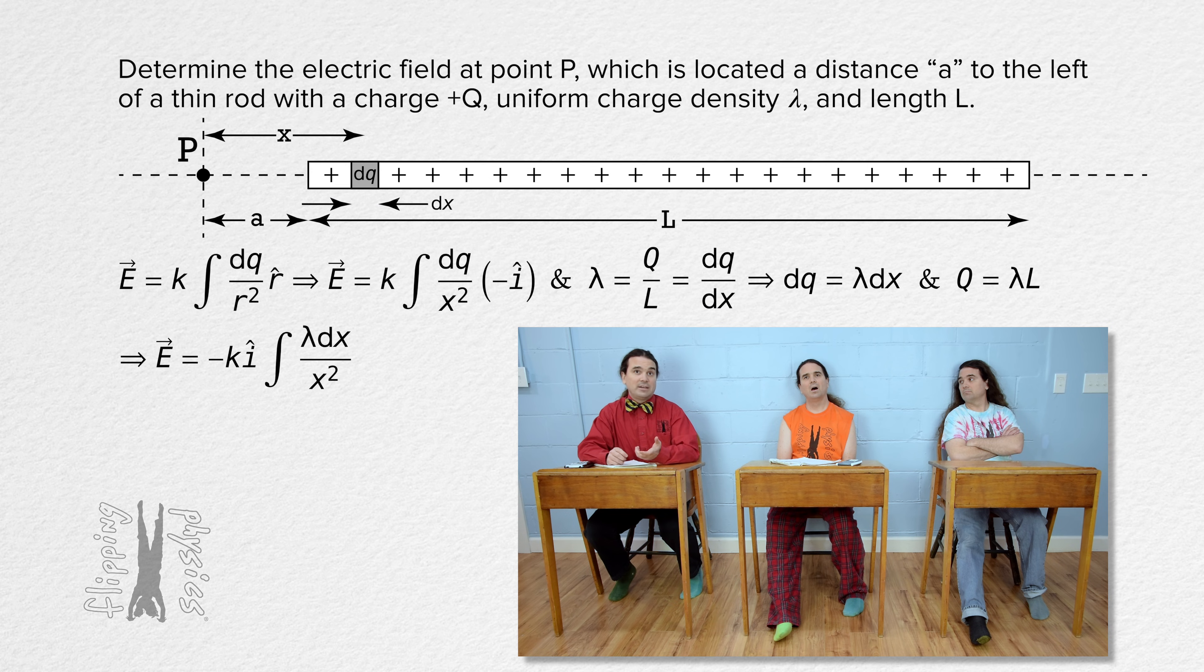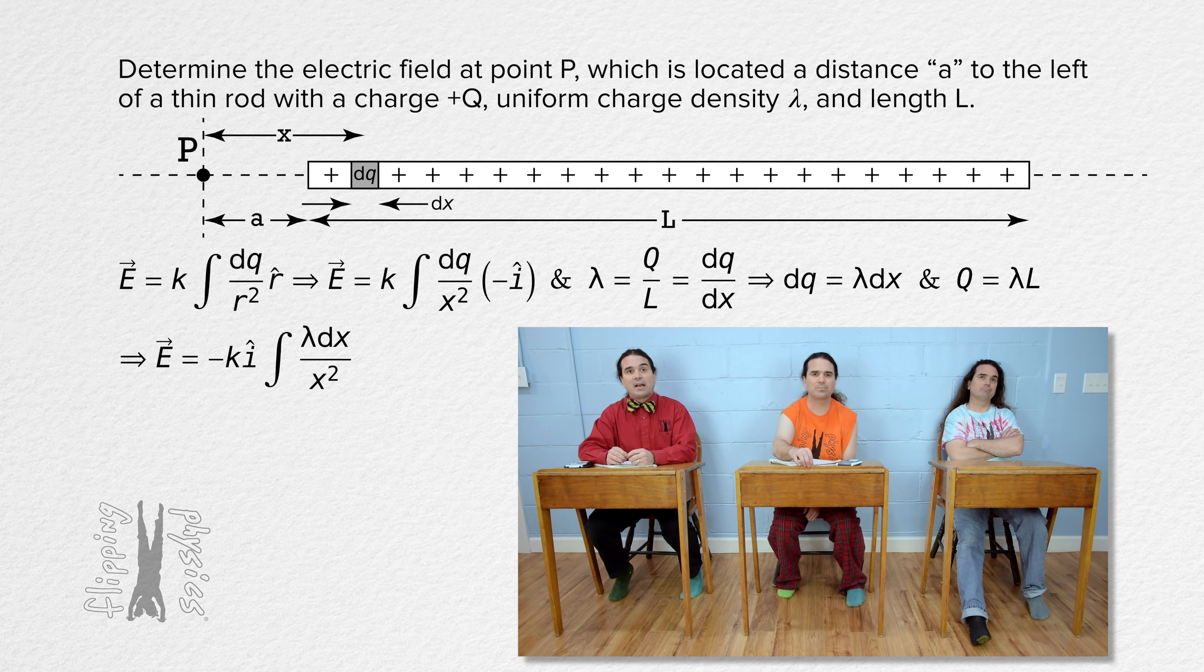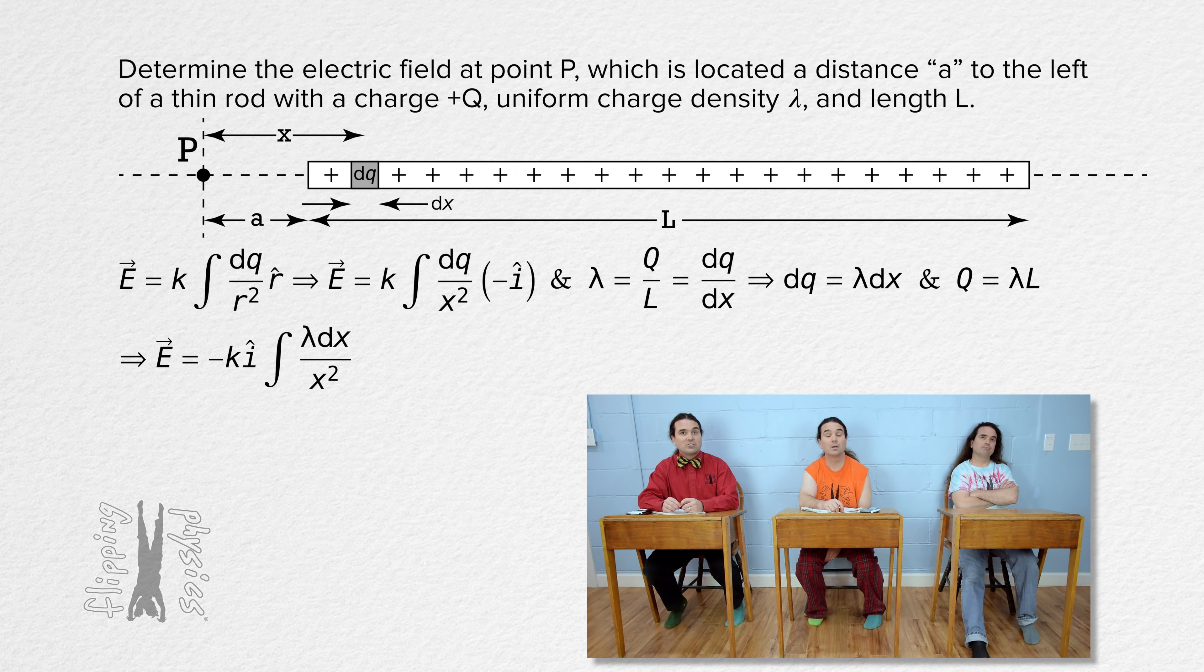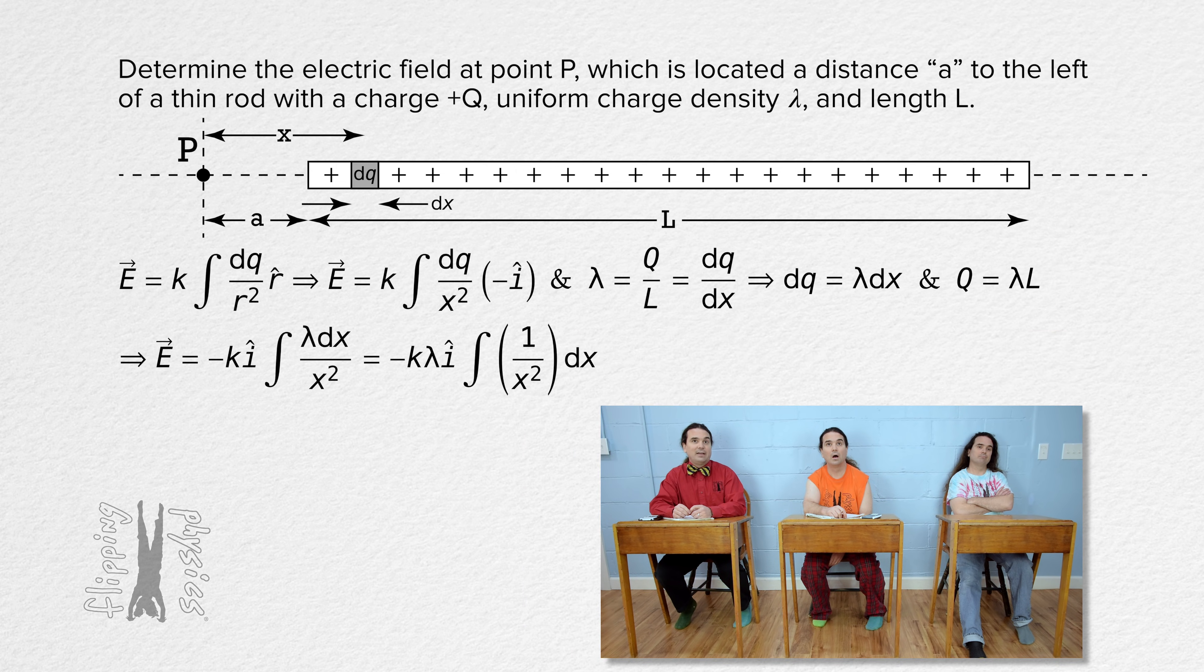We can substitute linear charge density times dx in for dq and take negative unit vector i out from the integral. Actually, linear charge density is also constant over the whole length of the rod, so that can come out from the integral as well.